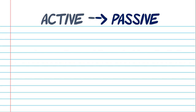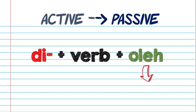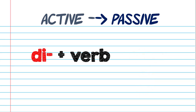To change an active sentence to be a passive sentence, you need to add prefix di- in front of the verb, and you can add 'oleh.' Adding 'oleh' is optional. If you don't use 'oleh,' it's fine and it doesn't change the meaning at all.